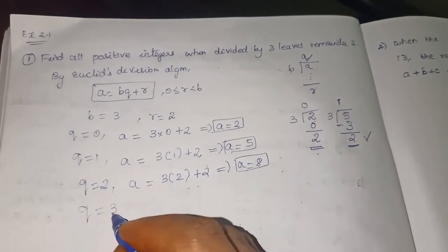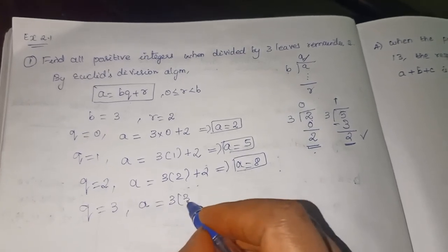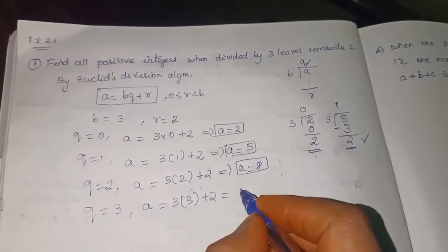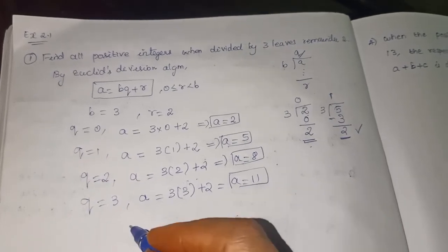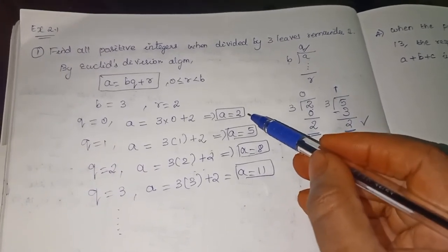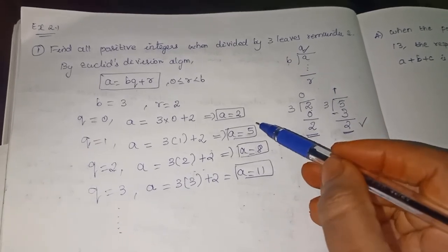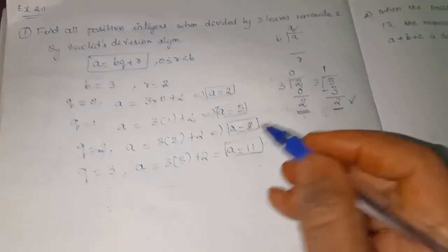Next, start applying Q is equal to 3. So A is equal to 3 into 3 plus 2. So A is equal to 11. It goes on. When you start applying values you will have the sequence. See here. A is 2, next is 5, next is 8, next is 11. This 3 is getting added every time, right? Next is 14, next is 17.